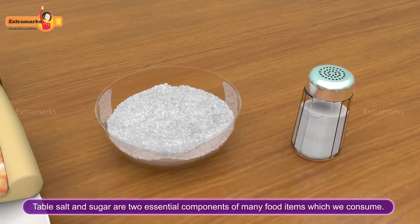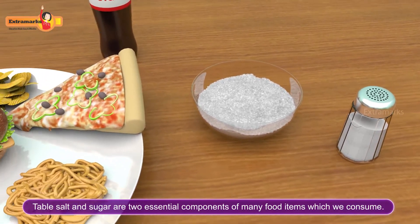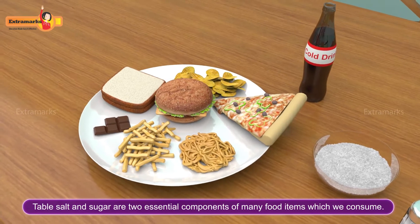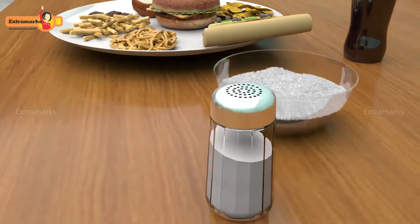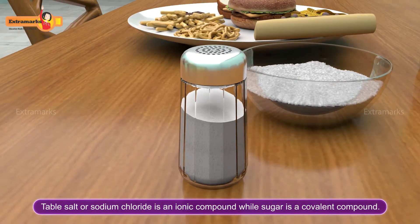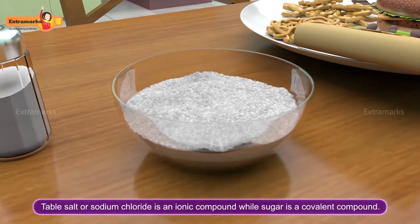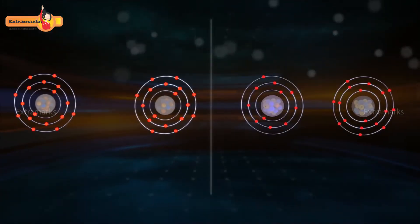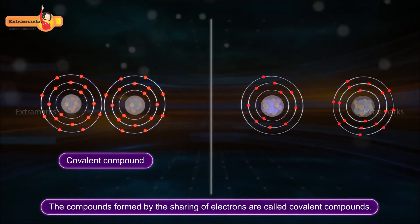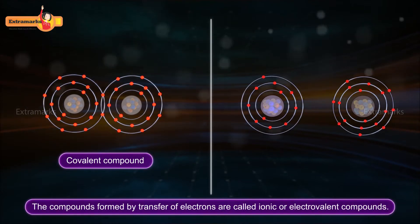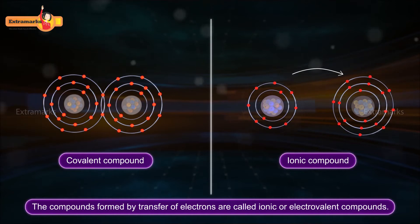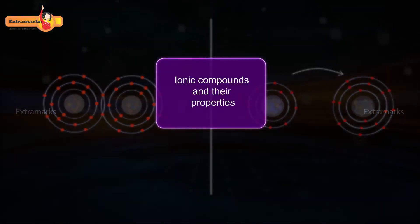Table salt and sugar are two essential components of many food items which we consume. Table salt, or sodium chloride, is an ionic compound while sugar is a covalent compound. The compounds formed by the sharing of electrons are called covalent compounds, while the compounds formed by transfer of electrons are called ionic or electrovalent compounds.